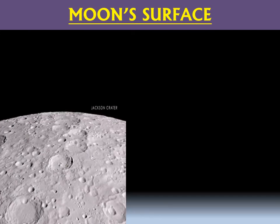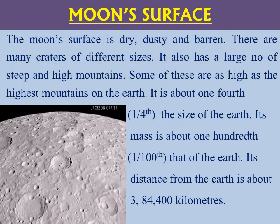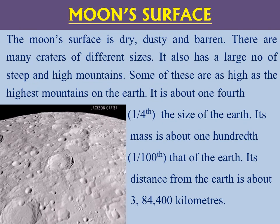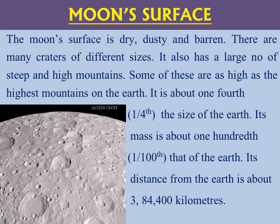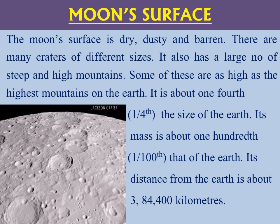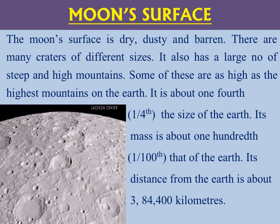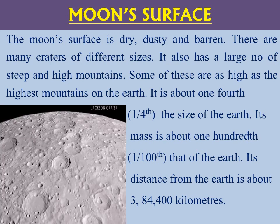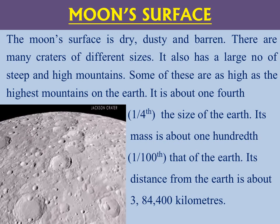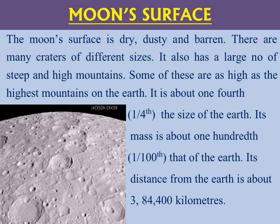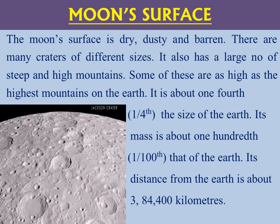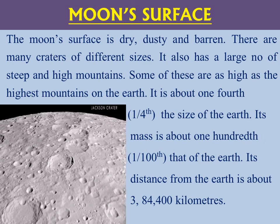Let's discuss about the moon's surface. The moon's surface is dusty, dry and barren. There are many craters of different sizes. It also has a large number of steep and high mountains. Some of these are as high as the highest mountains on the earth. The moon is about one-fourth the size of the earth. Its mass is very small when compared to earth. It is at a large distance from the earth — around 384,400 kilometers.